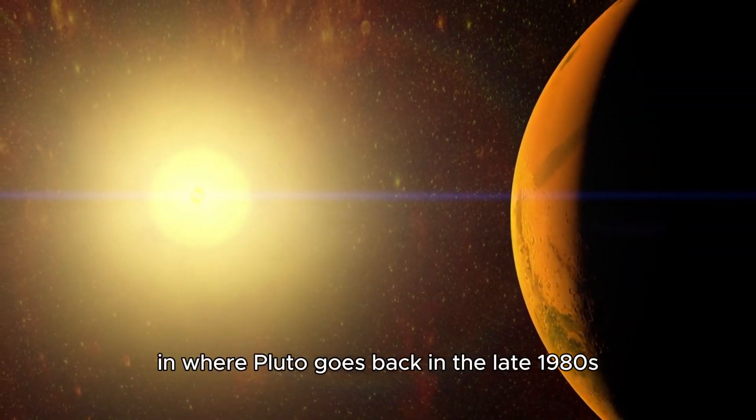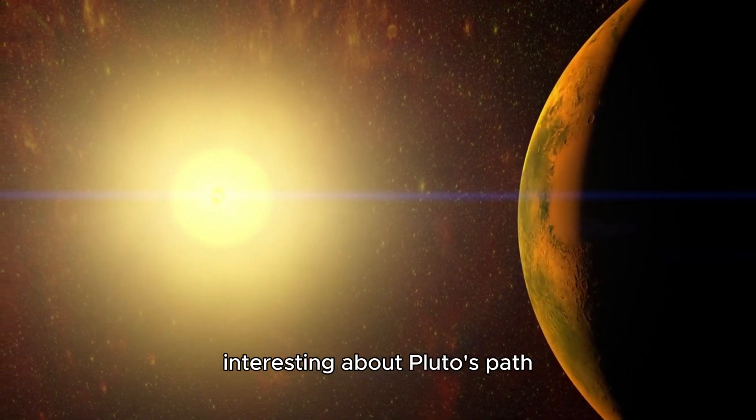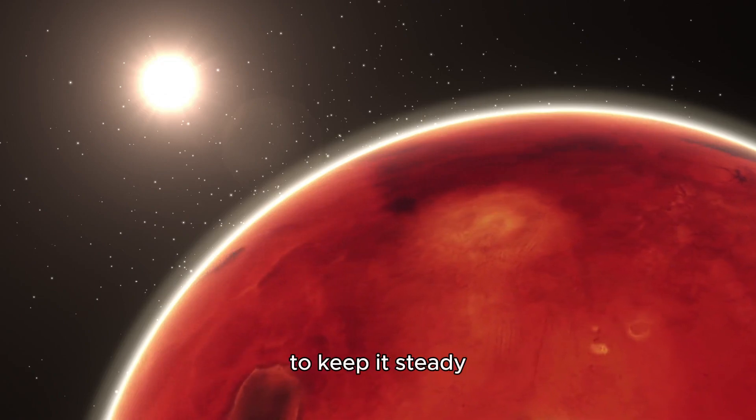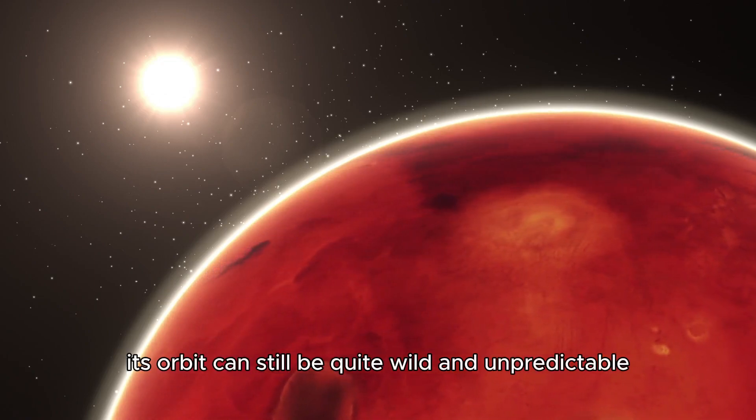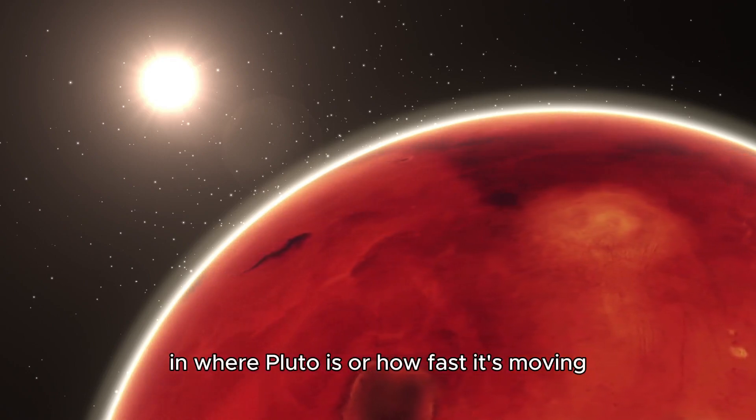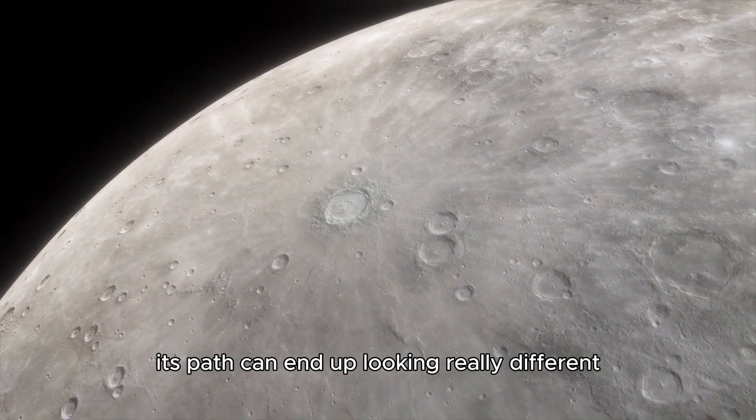Back in the late 1980s, these simulations revealed something really interesting about Pluto's path. Even though it has factors like O and latitude libration to keep it steady, its orbit can still be quite wild and unpredictable. If you start off with just a tiny difference in where Pluto is or how fast it's moving, over many years, its path can end up looking really different.